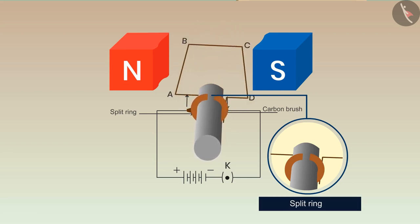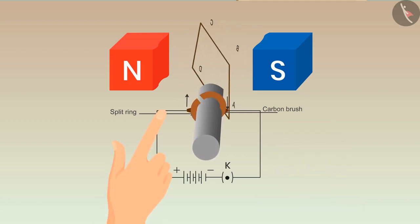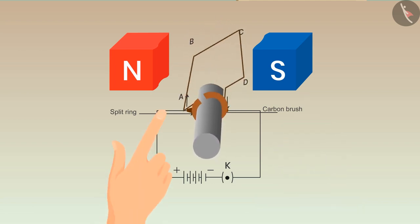Split ring is introduced in the system to keep the rotation in one direction only. Split ring is a special kind of ring which has two halves. The ends of the coil are connected with these halves which are then connected to the circuit with the help of carbon brushes which helps to keep the flow of electric current in one direction only in the circuit.